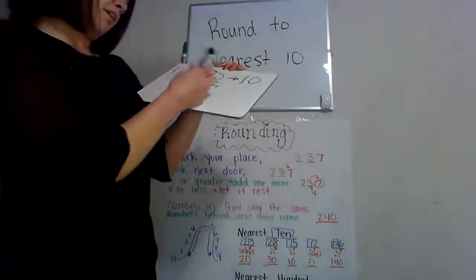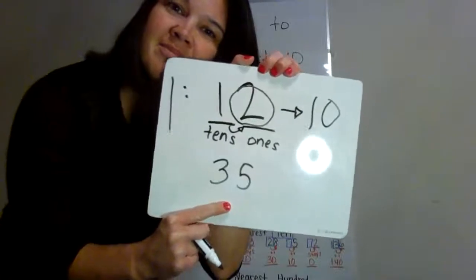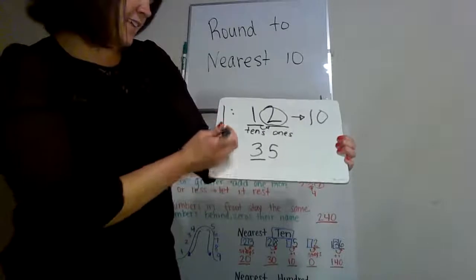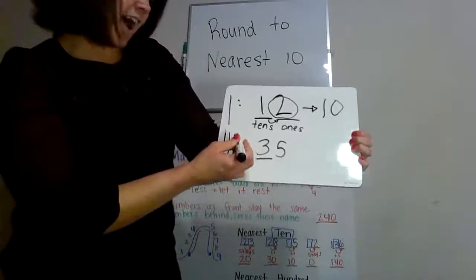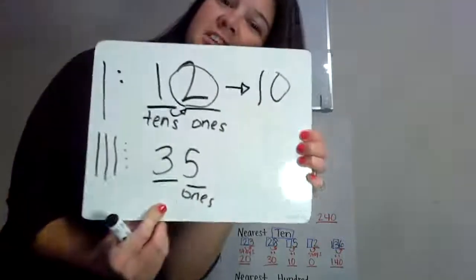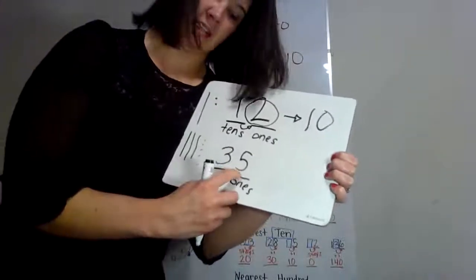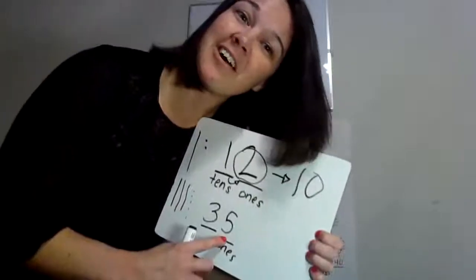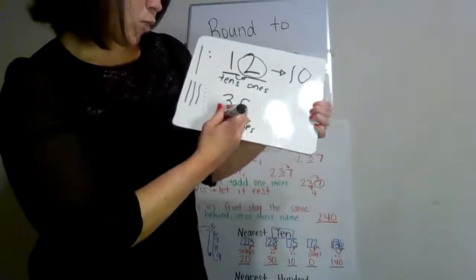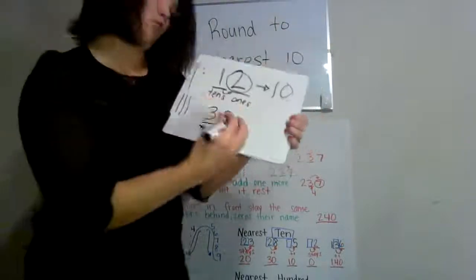If I had the number 35, what number is in the tens place? The three. Good job. So we have three tens and five ones. If we want to round to the nearest tens place, we find the place, look next door. Is that five or bigger? Yes. So we're going to add one more to the tens place. So 35 rounds up to 40.